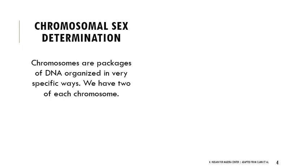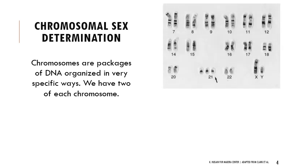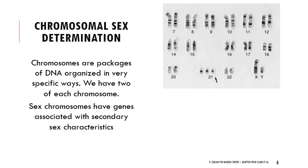In terms of chromosomal sex determination, chromosomes are packages of DNA organized in very specific ways. We have 23 different types of chromosomes and we have two of each — one set from our biological mother, one from our biological father — and they match up in terms of patterns and size. The sex chromosomes, X and Y, have genes associated with secondary sex characteristics such as hair or breast tissue development. The rest are called autosomal chromosomes.